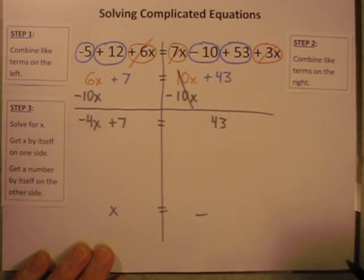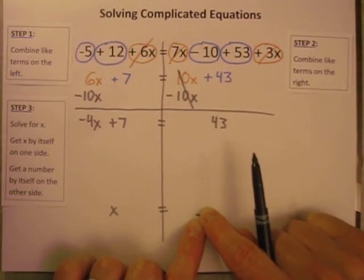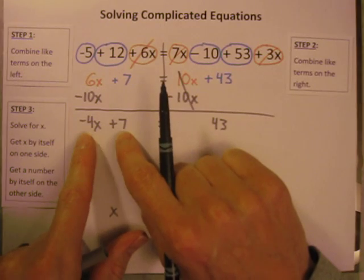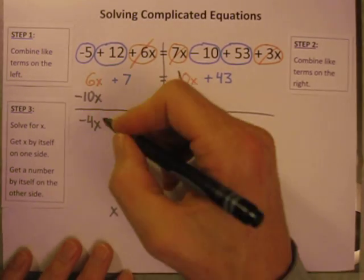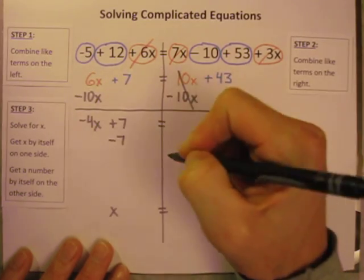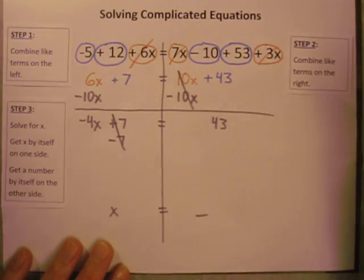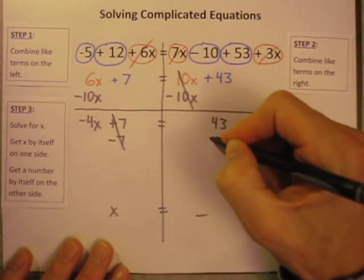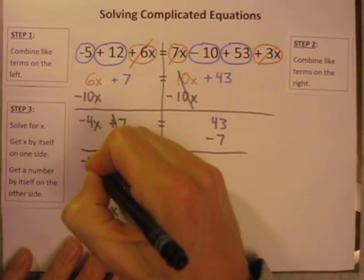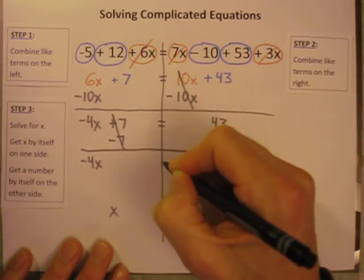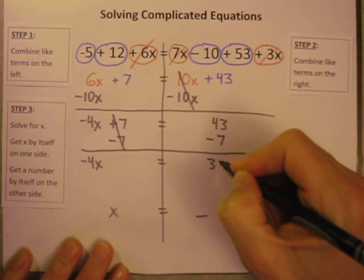Now it's just a two-step equation. I got a number all by itself on the right. Now I need to get this x all by itself over here. So let's get rid of the plus 7 and get rid of the times negative 4. Opposite of plus 7, minus 7. Plus 7 minus 7 is zero. It cancels. But I better subtract it from the right side too. What's remaining here? Negative 4x is over on the left. 43 minus 7 is going to be 36.